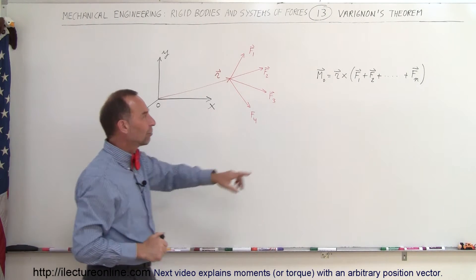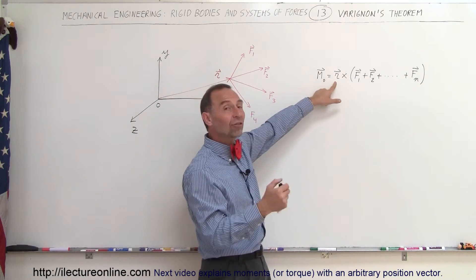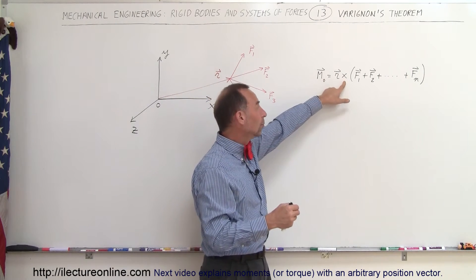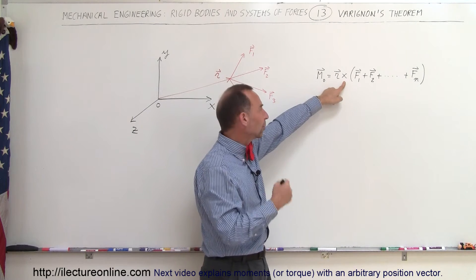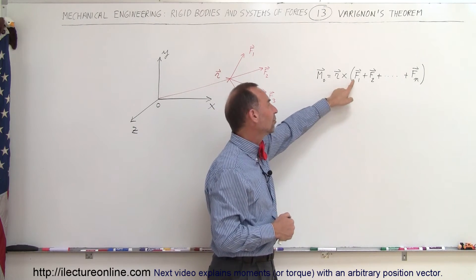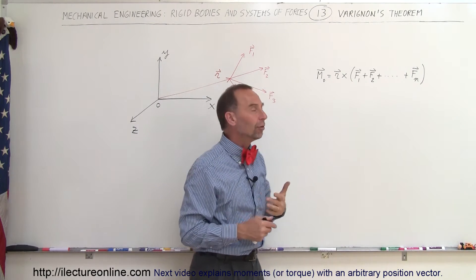It turns out that the moment, therefore, is equal to the position vector r multiplied in the form of a cross product or vector product times the sum of all the forces involved.